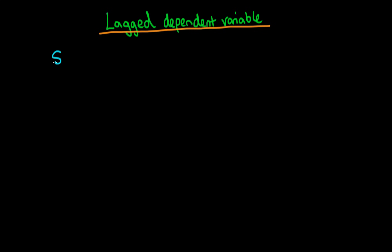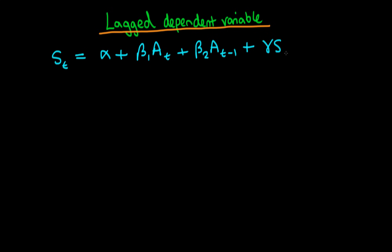The idea here is let's say we have a company's sales at time t, and we say that that's related to some measures of advertising — so it might depend on the amount of advertising spent today and the amount spent yesterday, because people might still remember it. But we're also saying that sales potentially depends on what sales were yesterday, so it might equal gamma times the amount of sales yesterday or last week, plus some error term.